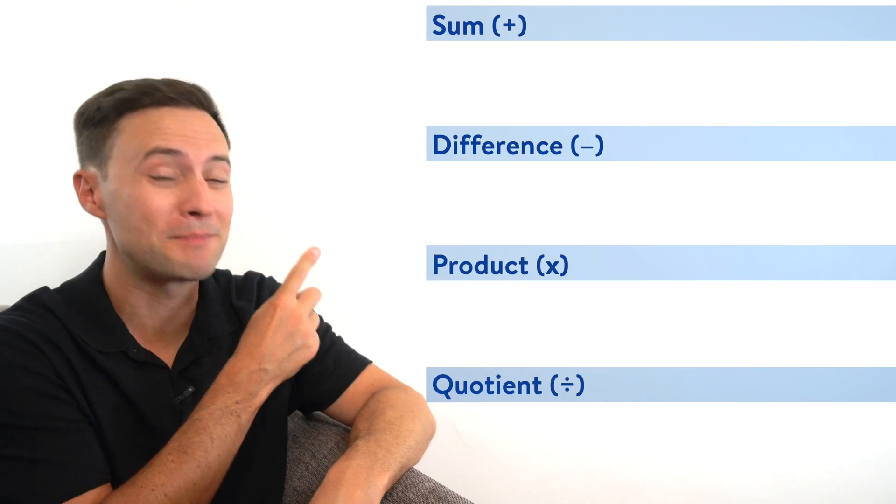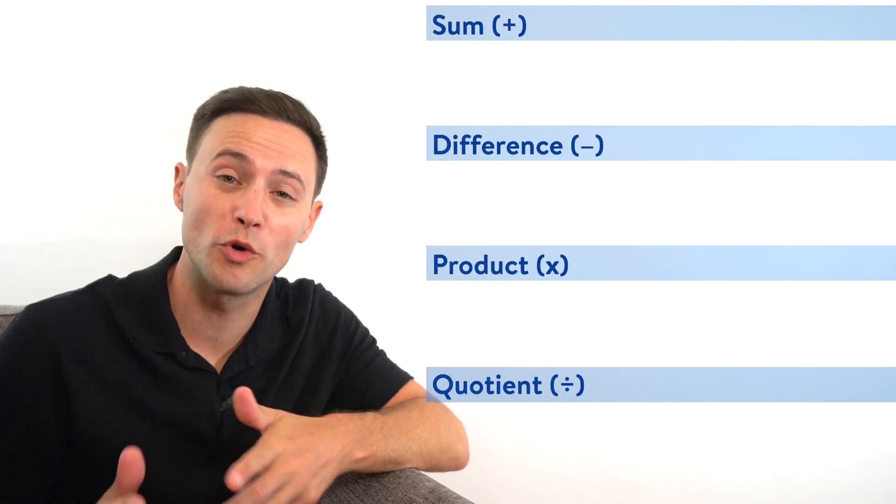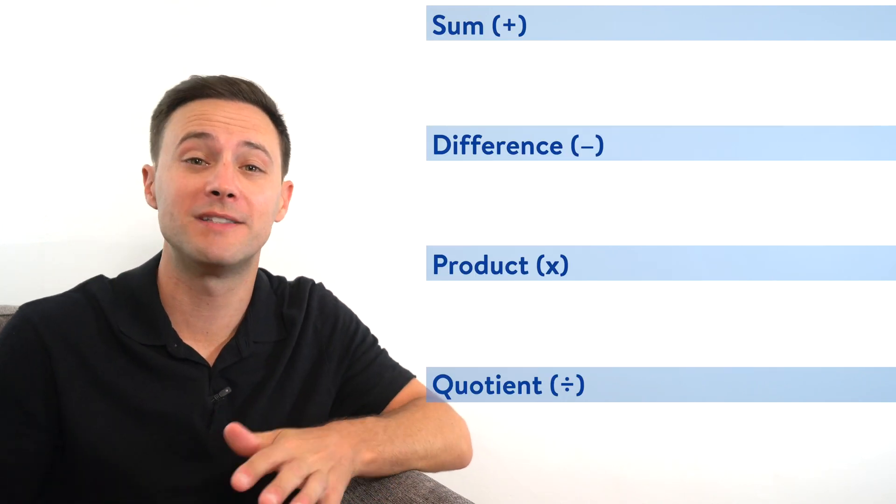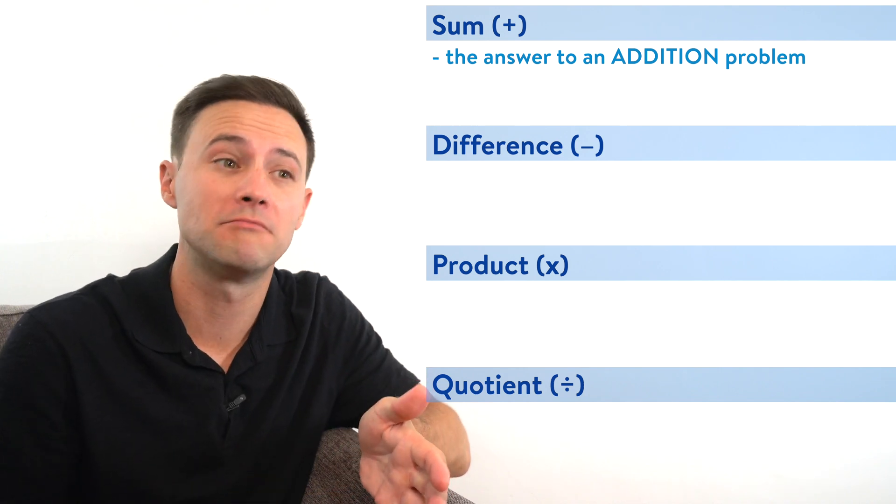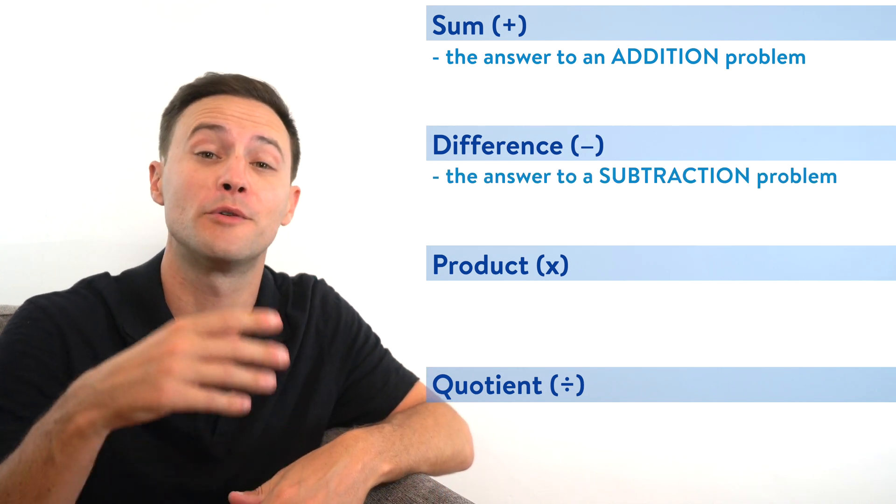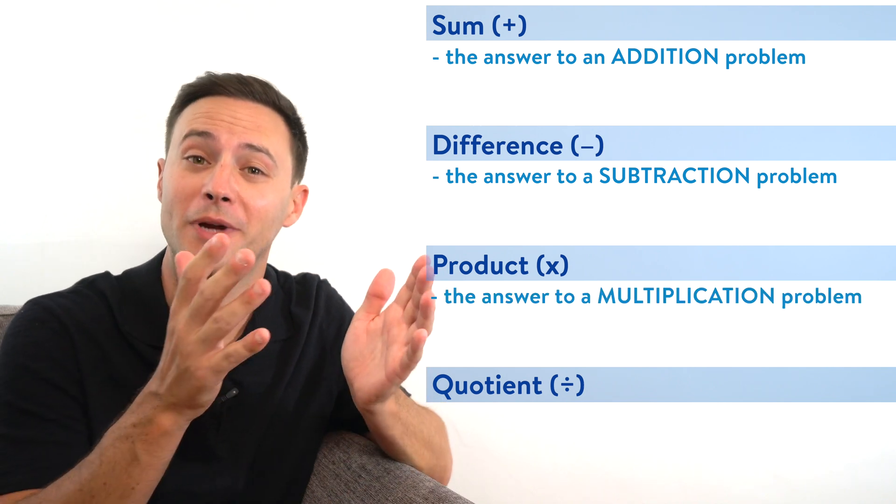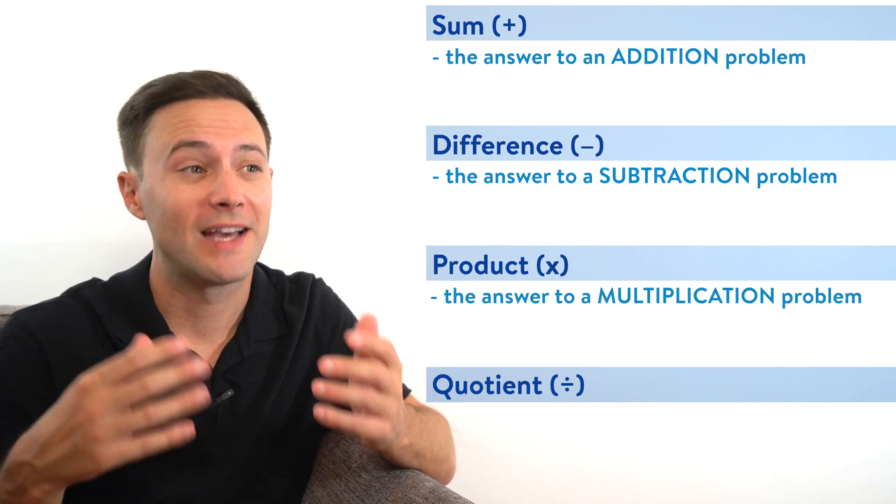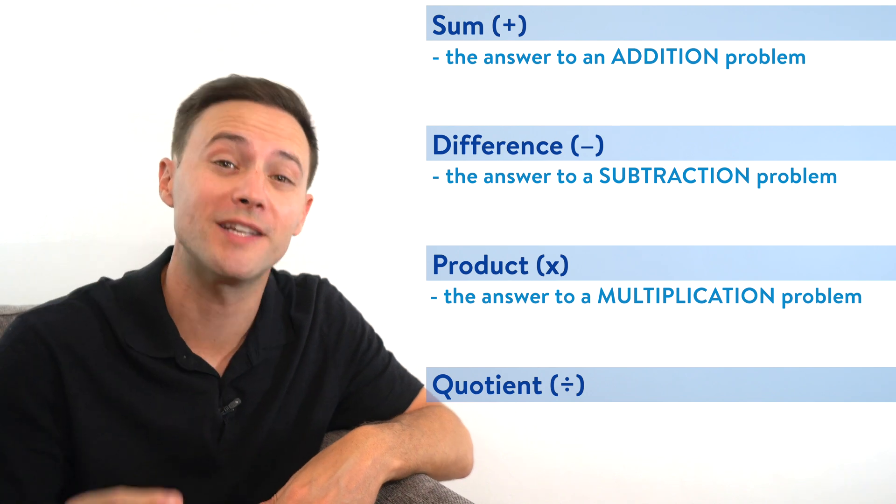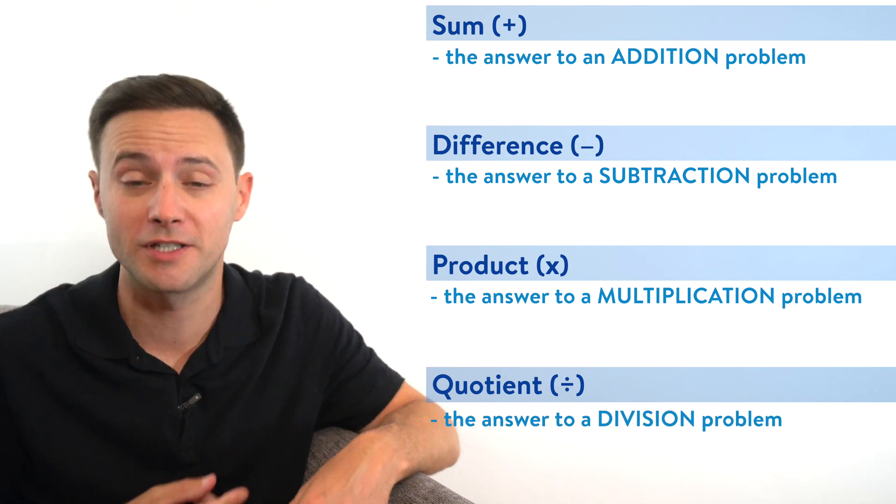Before we get to the first example, there's a few terms we need to go over. And those are sum, difference, product, and quotient. Sum just means the answer to an addition problem. Difference, the answer to a subtraction problem. Product, answer to a multiplication problem. And you could probably guess quotient is the answer to a division problem.